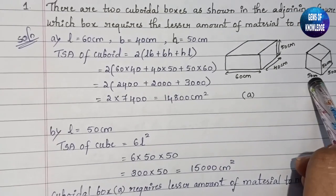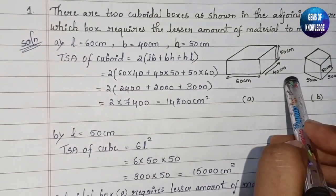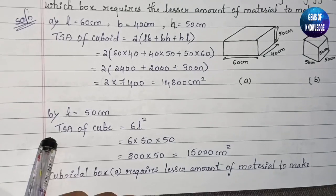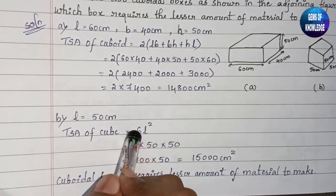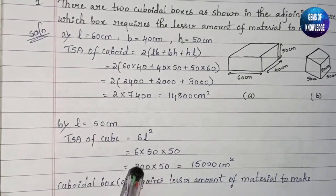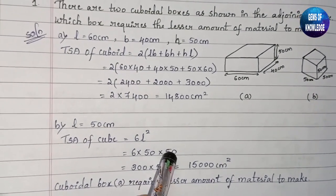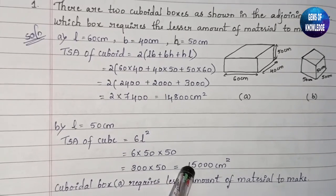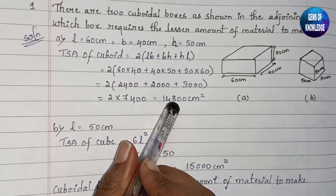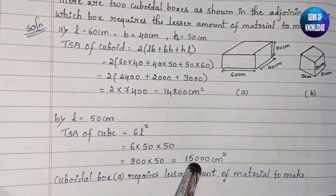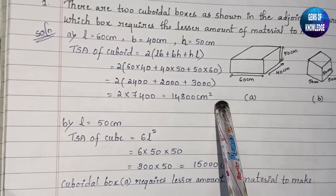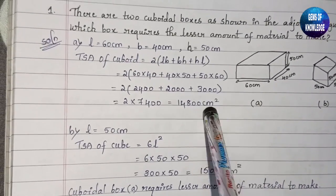For the second box, all dimensions are 50 cm, so it is a cube. TSA of cube = 6l² = 6 × 50² = 6 × 2500 = 15,000 cm². Comparing: Box A has 14,800 cm² and Box B has 15,000 cm², so Box A requires less material to make.